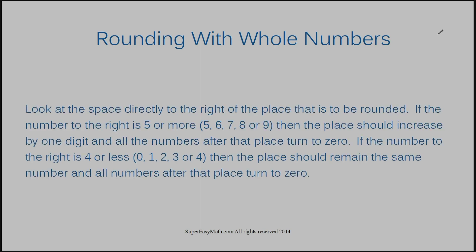When rounding with whole numbers, you want to look at the space directly to the right of the place that's to be rounded. If the number to the right is 5 or more — meaning 5, 6, 7, 8, or 9 — then the place should increase by one digit and all the numbers after that place turn to 0.